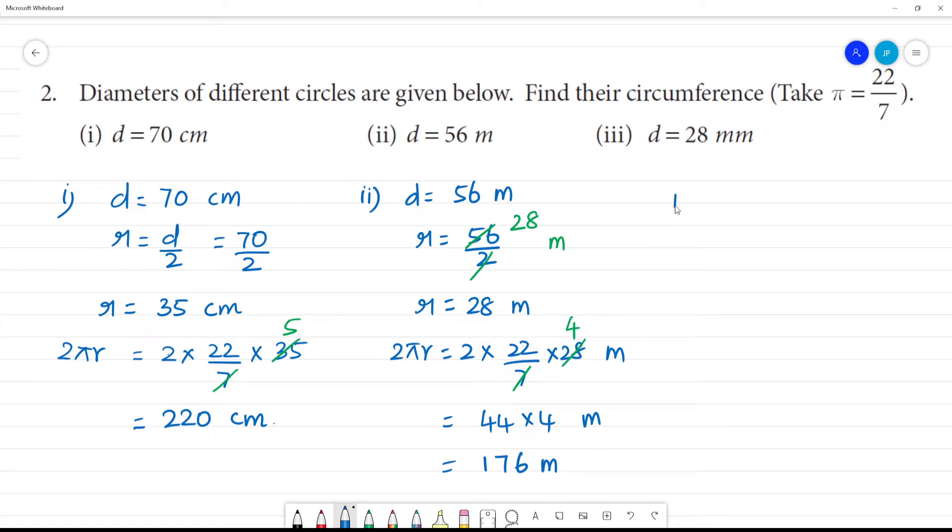Clear? Next, third one. Diameter is equal to 28 millimeters. Radius is equal to 28 by 2 millimeters. Then, 14 millimeters. Radius is 14 millimeters.